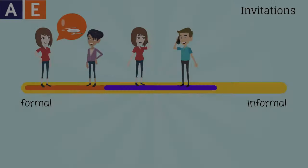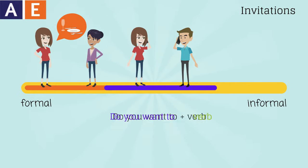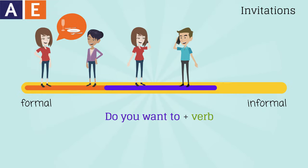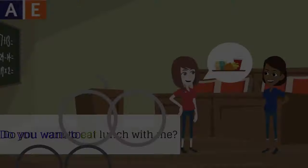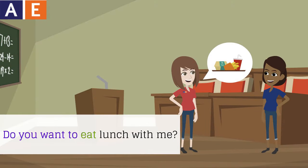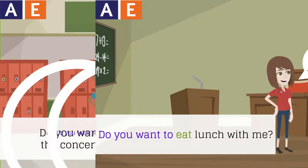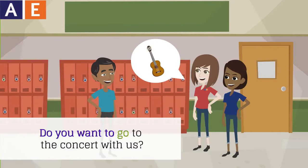A less formal way is 'Do you want to' plus a verb. For example: 'Do you want to eat lunch with me?' 'Do you want to go to the concert with us?'